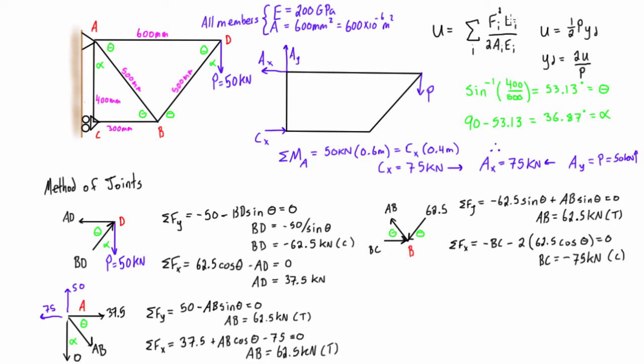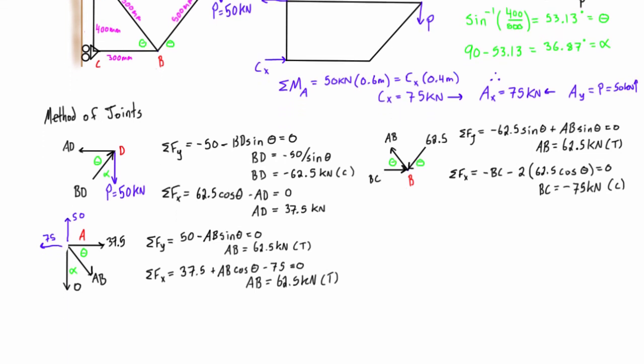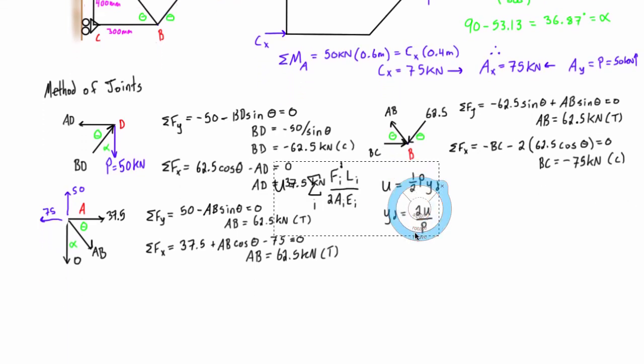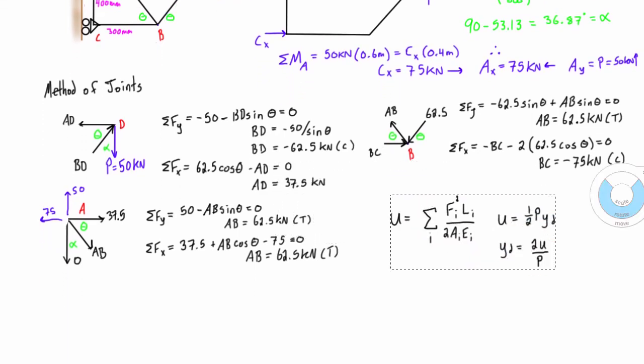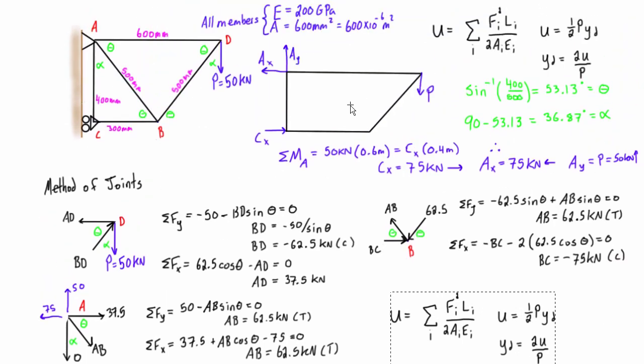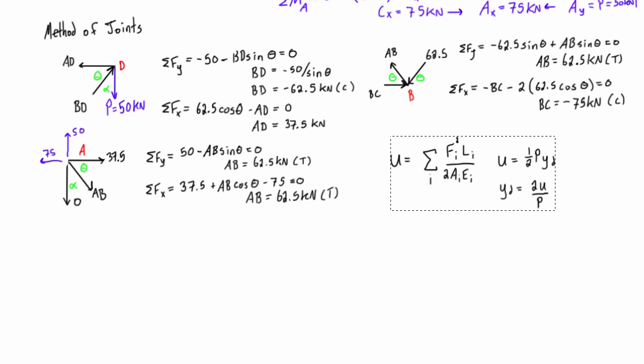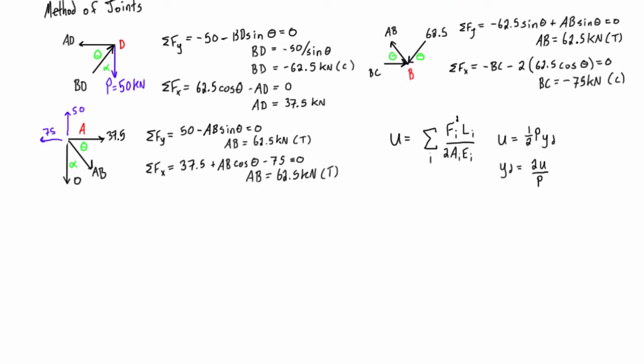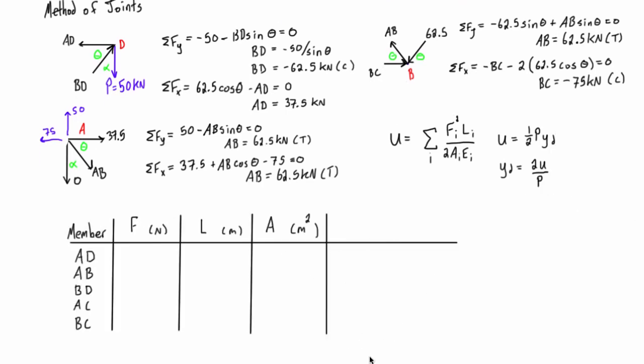All right, so now we have all of the internal forces, we have all the lengths, all of the areas, and all of the modulus of elasticity, so we can go ahead and plug our numbers into this equation. We have one, two, three, four, five members - this equation is going to get pretty long. So the way that I would recommend doing it instead is setting up a little table like this and just bringing in all of the known values that we have.